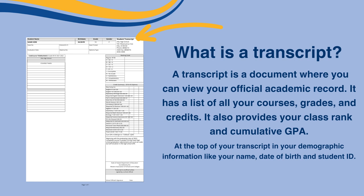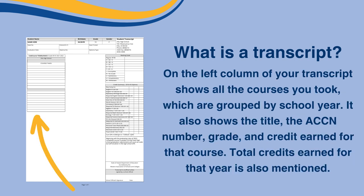It also provides your class rank and cumulative GPA. At the top of your transcript is your demographic information like your name, date of birth, and student ID. On the left column of your transcript shows all the courses you took, which are grouped by school year.